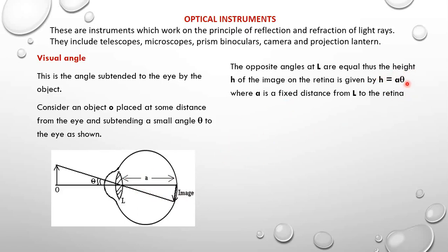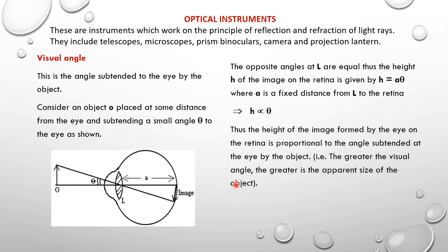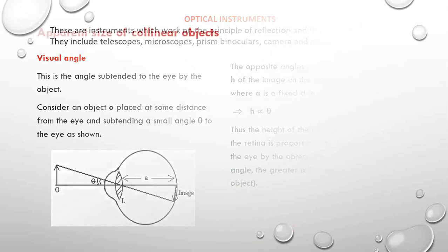This implies that h is proportional to theta. So we can say that the height of the image formed by the retina is proportional to the angle subtended at the eye by the object. That is to say, the greater the visual angle, the greater the apparent size of the object.